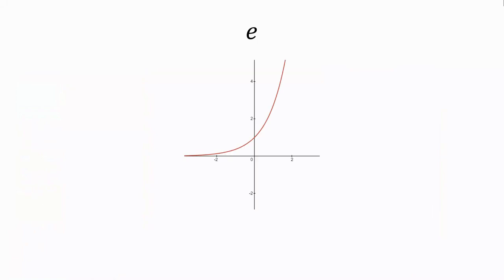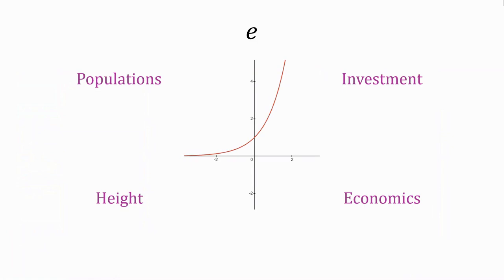Euler's number is a universal constant that emerges whenever there's continuous natural growth, where compounding happens at every moment. When we took that limit to infinity, essentially we were saying it compounds infinite times in that year, so it's constantly compounding. Whether it's the growth of populations, investments, or any phenomenon that allows for an exponential pattern, e encapsulates this organic progression. It's a fundamental building block in mathematics, appearing in various contexts where growth is the key.